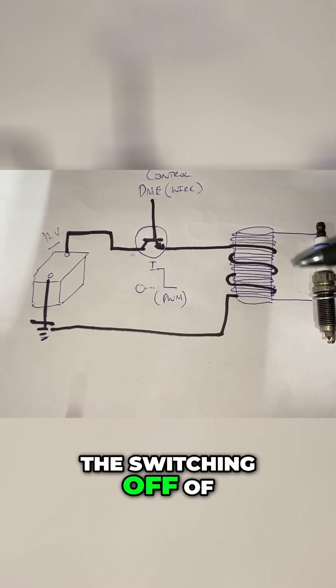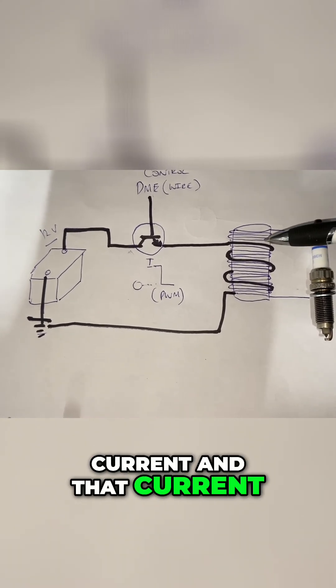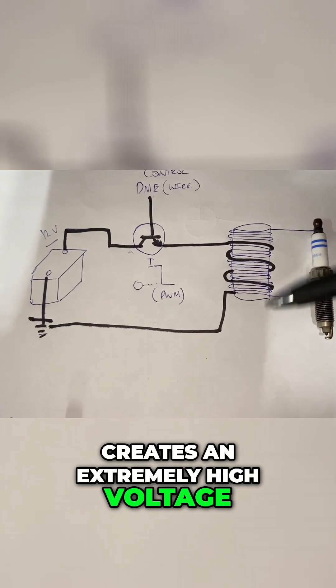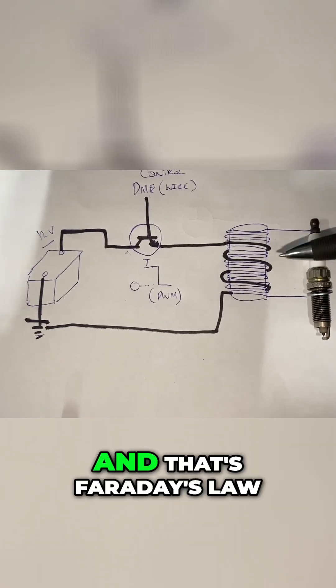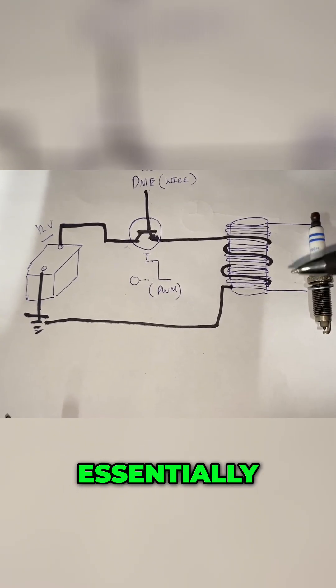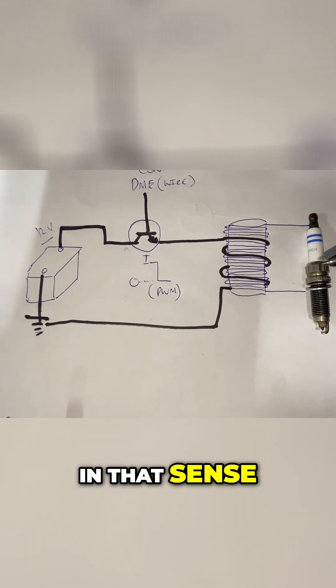The switching off of the primary induces a current and that current creates an extremely high voltage in the ignition coil. That's Faraday's law, essentially. That's how it works in that sense.